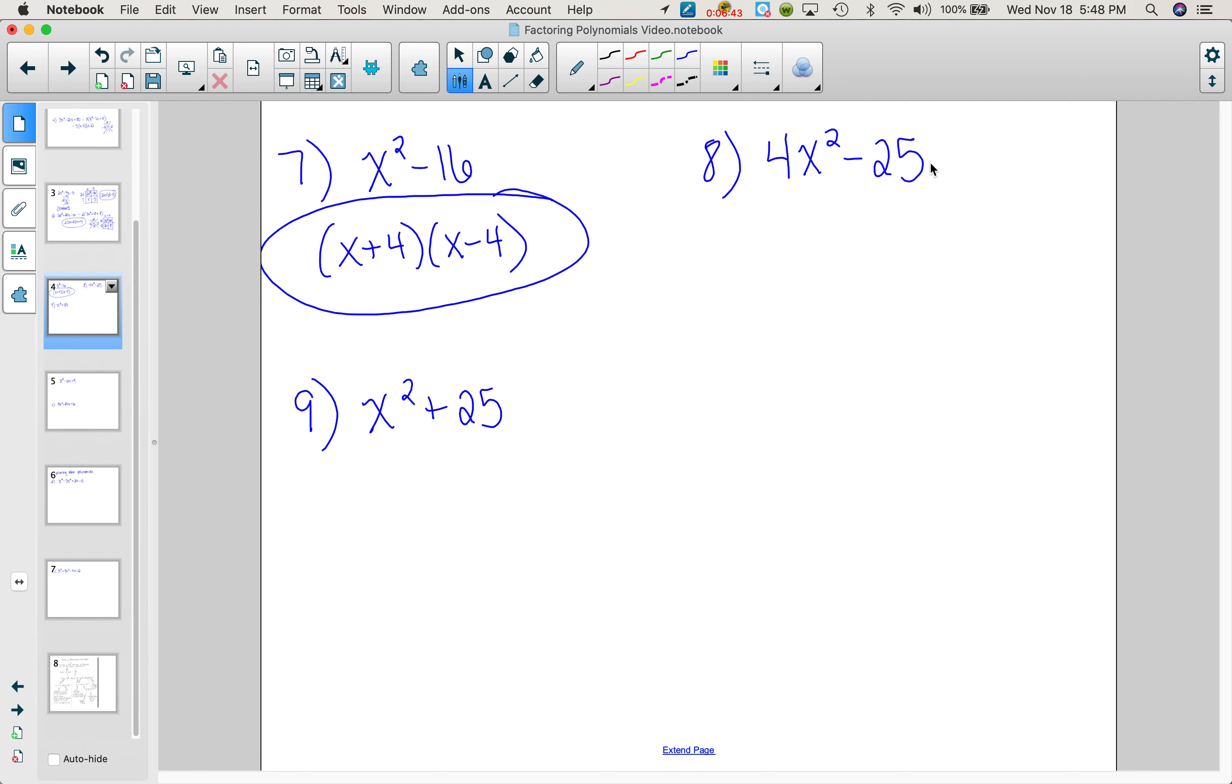Here. If you went through all those, you would find yourself at the same place. This is the difference because it's subtraction of two squares. The square root of 4x squared is 2x, so we get 2x plus 5 and 2x minus 5.